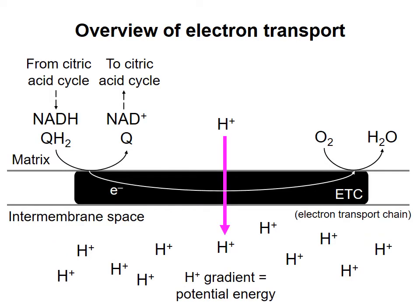The general process is pictured in this diagram. NADH and QH2, which are produced in the citric acid cycle, give electrons to proteins in the electron transport chain.